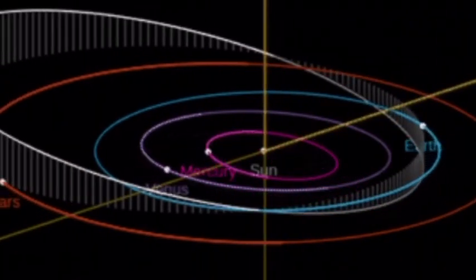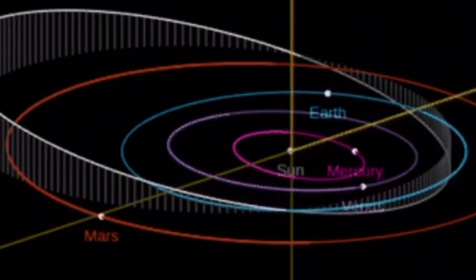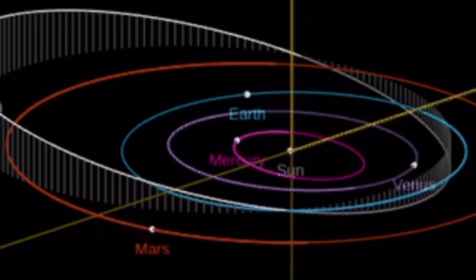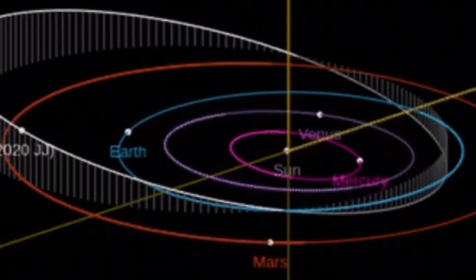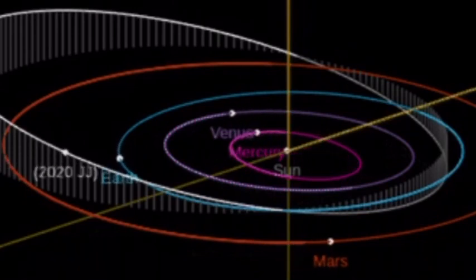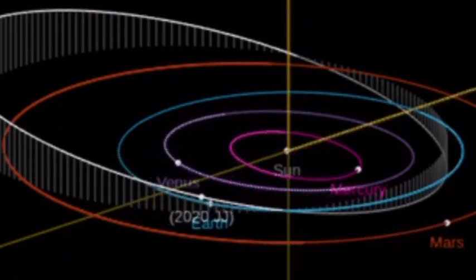Close asteroid passes like this aren't really anything worth worrying about, but it's always worth keeping an eye on what's going on near our planet. You can catch some interesting sights by watching the sky this week, like the Eta Aquariid Meteor Shower and the Last Supermoon of the Year.